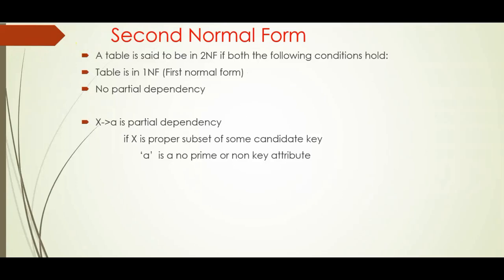Hi guys, this is Ram Krishna explaining the second normal form. As in earlier videos I gave you the first normal form, extending that to talk about the second normal form here. Basically, normal forms can help you reduce the redundancy in a relation. In this context, I will explain the second normal form with proper examples. The relation must be in the first normal form, where every field must contain only atomic values.